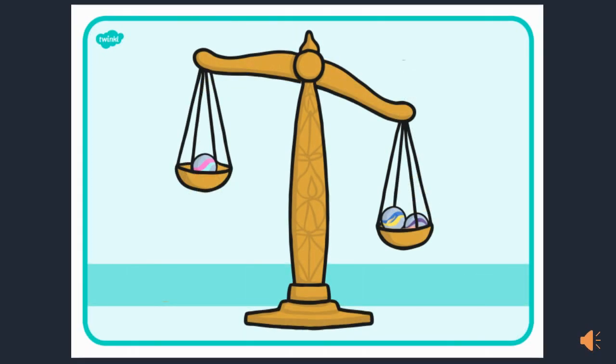Now look at this balance — I put one marble on the left pan and two marbles on the right pan. Which pan do you think is heavier? Of course the pan with two marbles is going to be heavier than that with one marble. The heavier side moves down and the lighter side moves up.